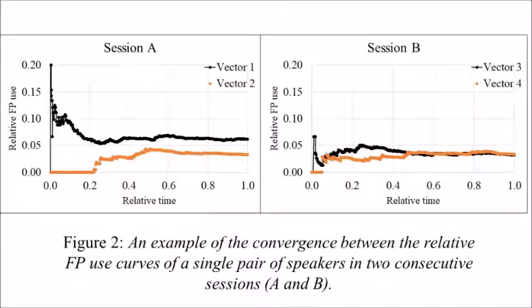Here we show an example from two consecutive sessions of the interaction between the vectors. The x-axis represents normalized time, while the y-axis represents the relative use of filled pauses. The figure on the left shows convergence between the curves of a single pair of speakers. This convergence continues in session B, where the two vectors almost merge.